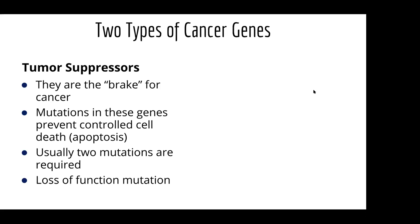We know childhood cancer happens this way because most childhood cancers are just a few specific types. You won't see lung cancer in kids — that's much more attributed to other things. But we do see certain brain cancers, some leukemias, and some sarcomas.